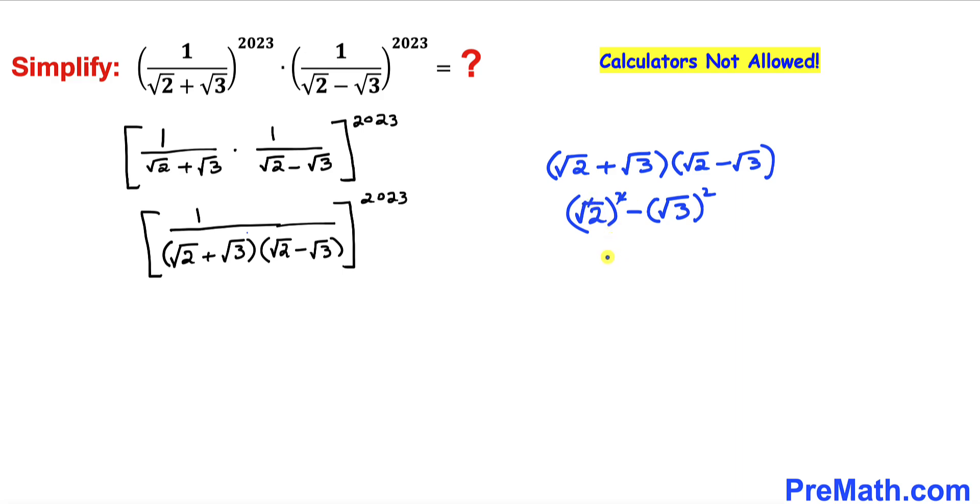Here square and square root they undo each other, we got 2. Likewise, they cancel each other out, we got minus 3. So this turns out to be negative 1. Therefore, our whole denominator has been simplified to negative 1.